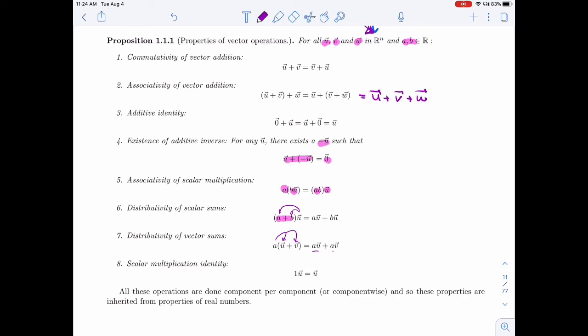Now, we're not going to prove any of these properties because really, since we've defined the operation component by component, these properties are simply coming from the properties of real numbers. If you spell it out, you just use that property of real numbers on each component and that's all.